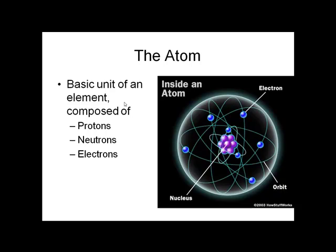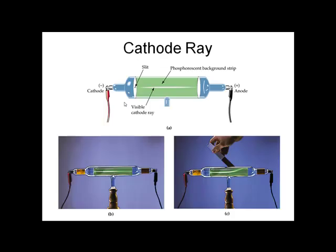JJ Thompson did some experiments with a cathode ray tube. He basically hooked up this cathode ray, an evacuated tube with an electric current, could be from a battery or from electricity. What he found with a fluorescent phosphorescent background is he could see the stream of particles going from one electrode to the other.